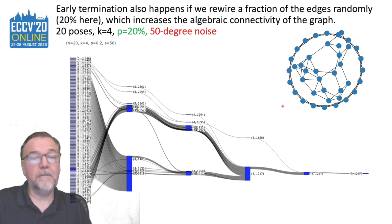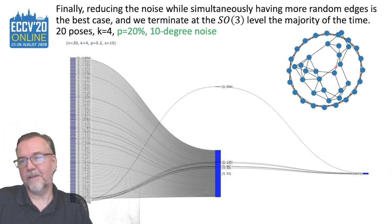If we do both, i.e. small graph noise and these connecting edges, you can see that almost all initial estimates converge at level three and there are a couple of stragglers at level four. So that's very encouraging.